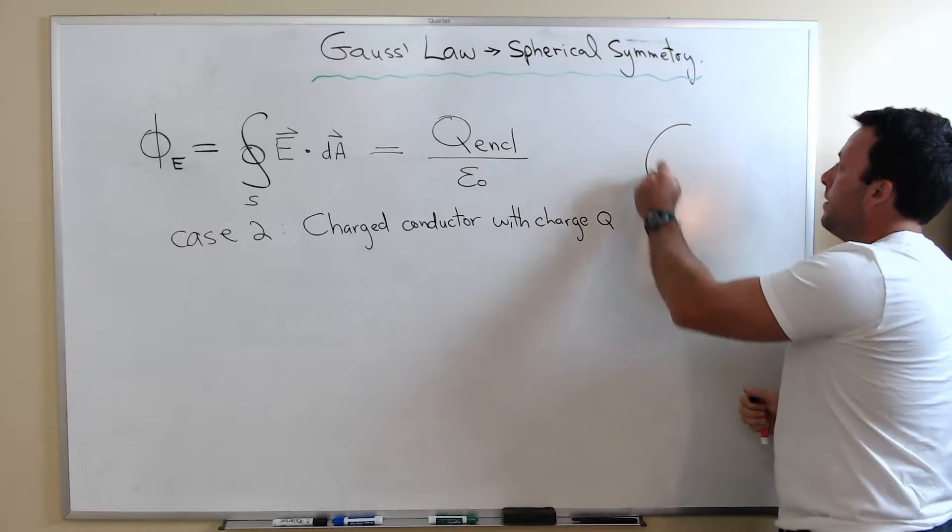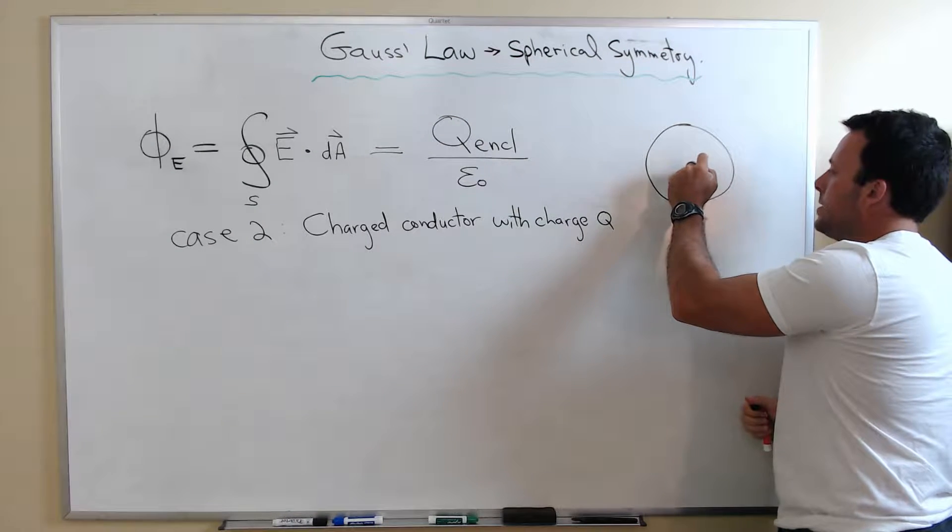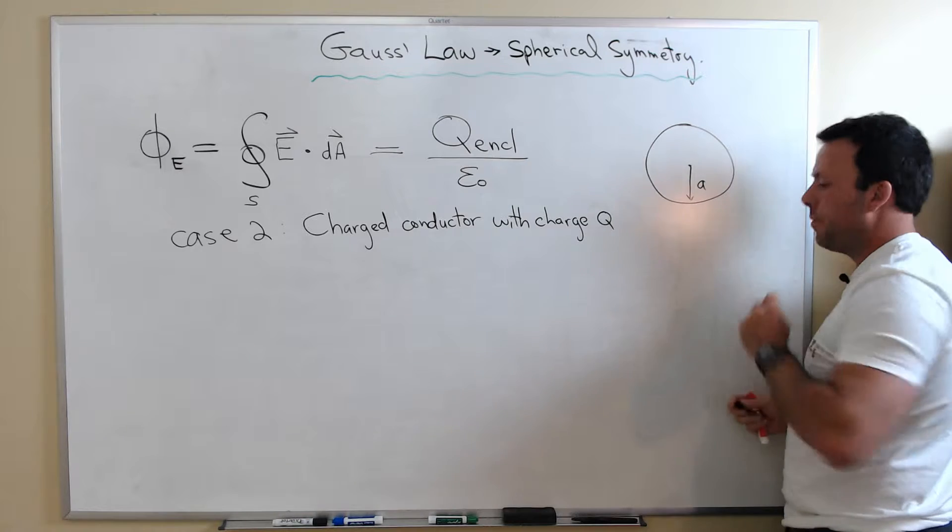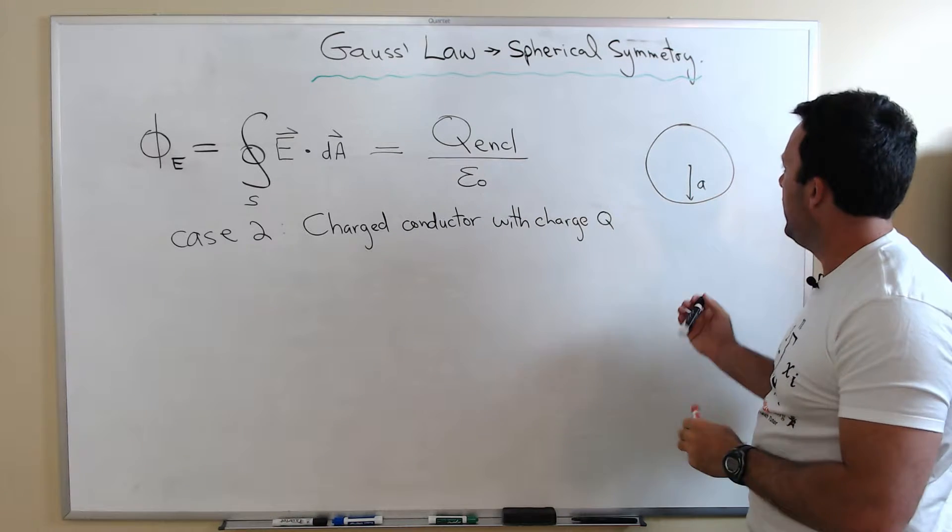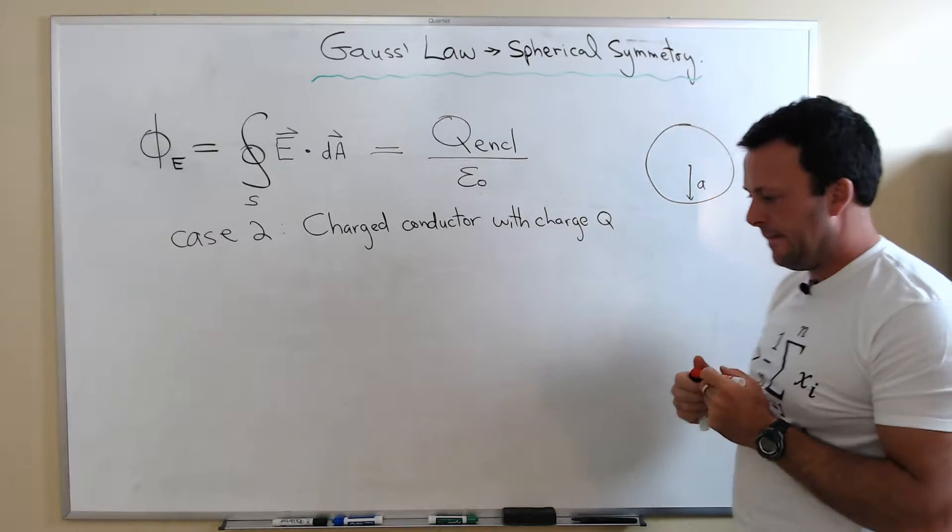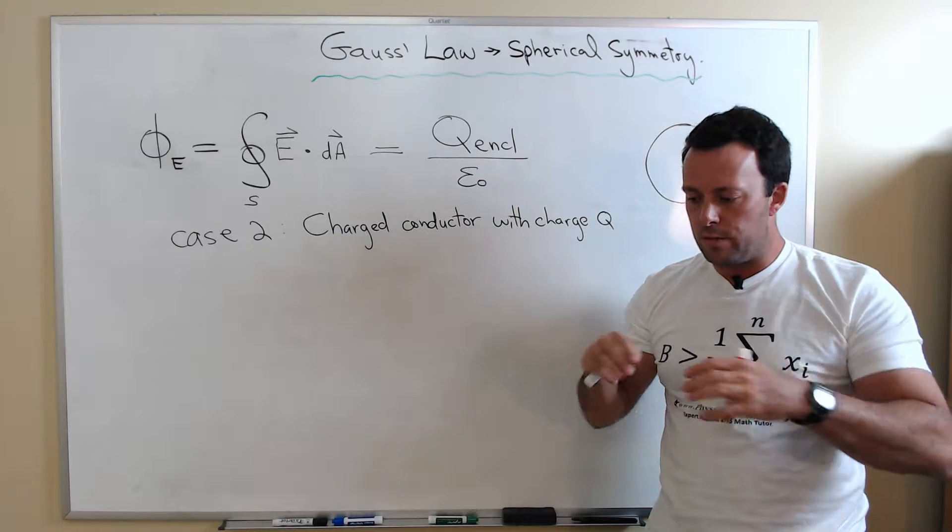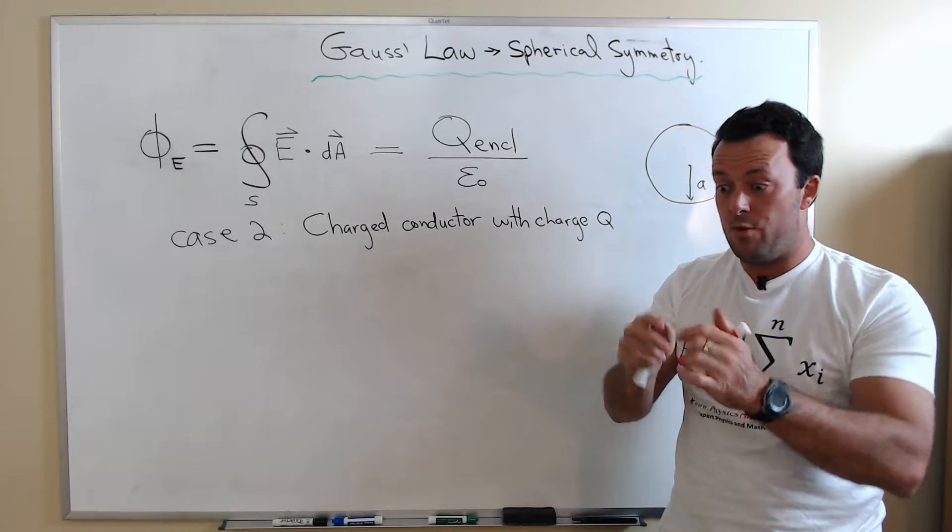So let me draw that conductor. Let's give it a radius, a size. It's going to have a radius A. And I'm going to give it some charge Q. So the one thing to know about conductors, if you put some charge on it, those charges are free to move.